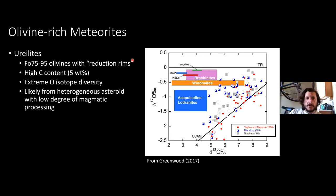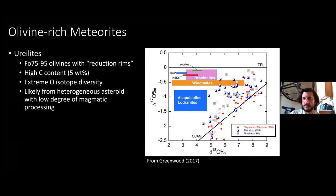Other olivine-rich meteorites include the ureilites. Some of these are olivine-rich with Fo75–95 olivines. They have interesting features: reduction rims around olivine grains, high carbon content up to 5 weight percent reduced carbon, and extreme oxygen isotopic diversity. An oxygen isotope diagram shows a large range of data, suggesting these are primitive achondrites that didn't fully equilibrate as they melted — likely from a heterogeneous asteroid with low degree of magmatic processing.